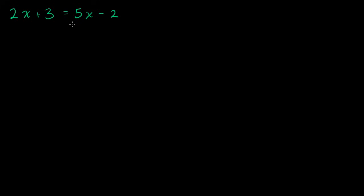The important thing to remember is we just want to isolate an x. Once you've isolated an x — you have x equals something — you're done. You've solved the equation. You can go back and check whether that works. So what we're going to do is just do a bunch of operations on both sides of the equation to eventually isolate the x.